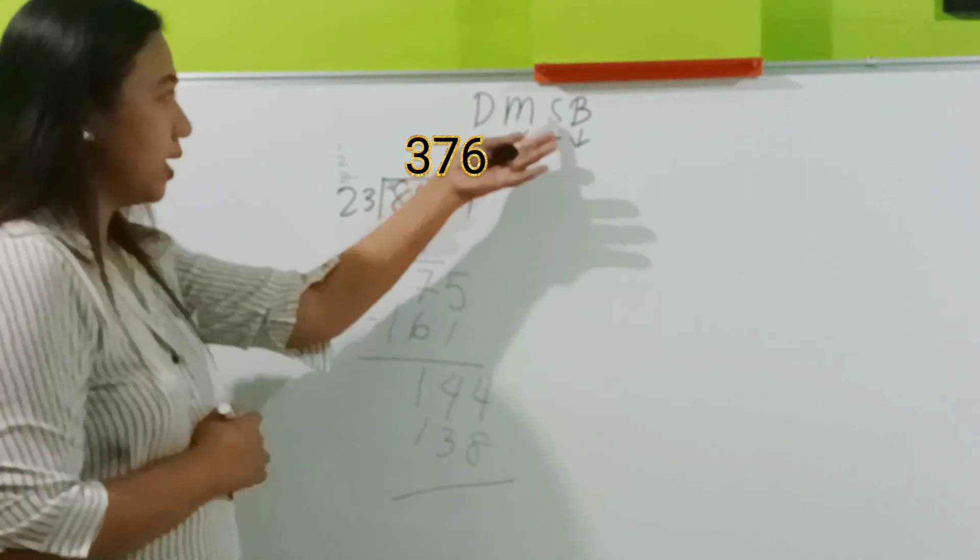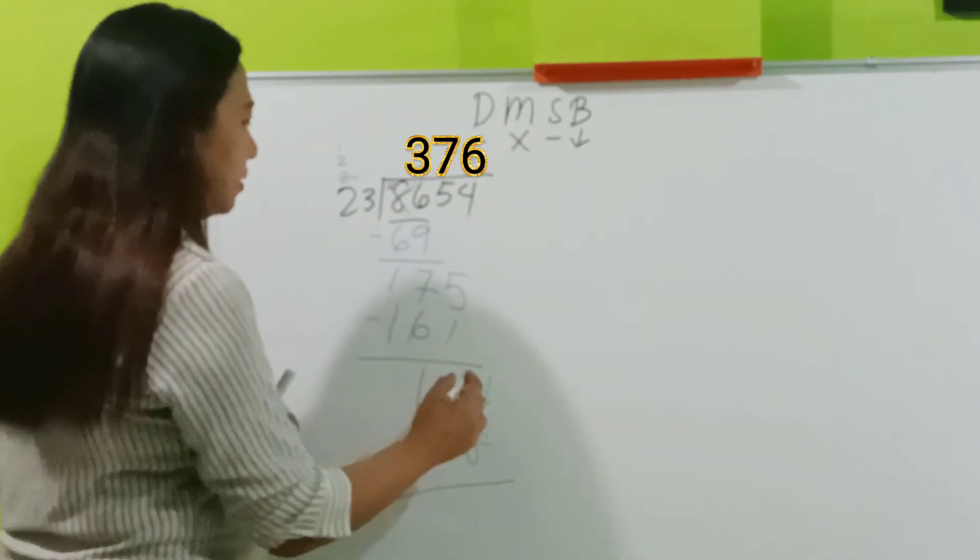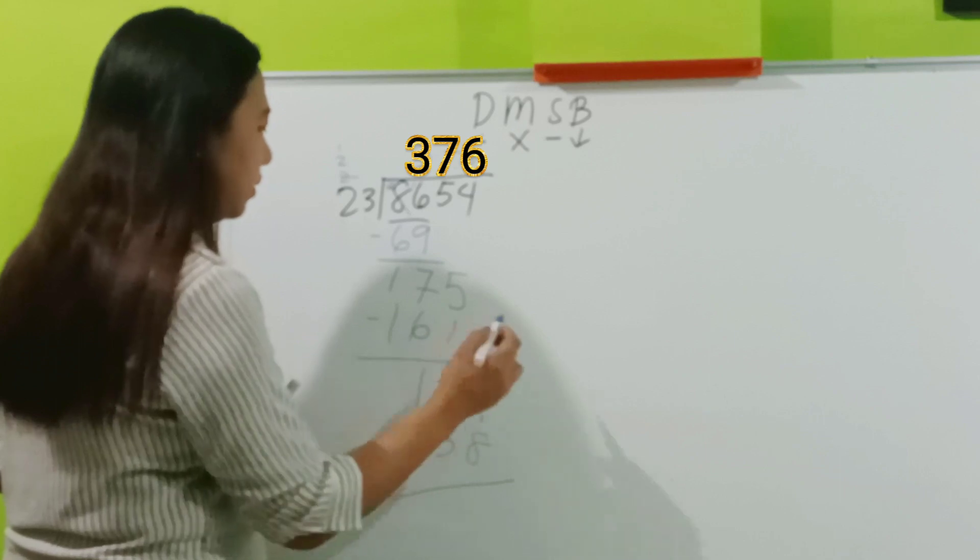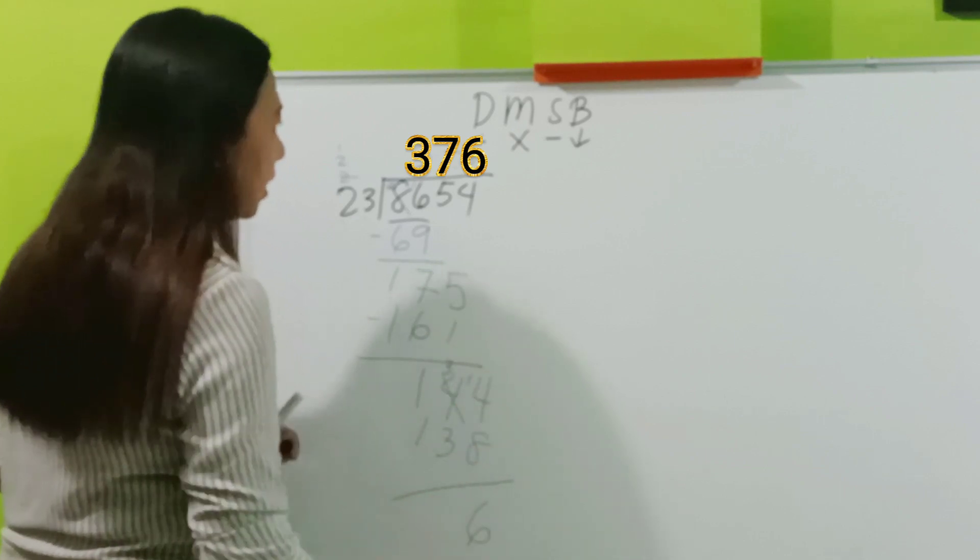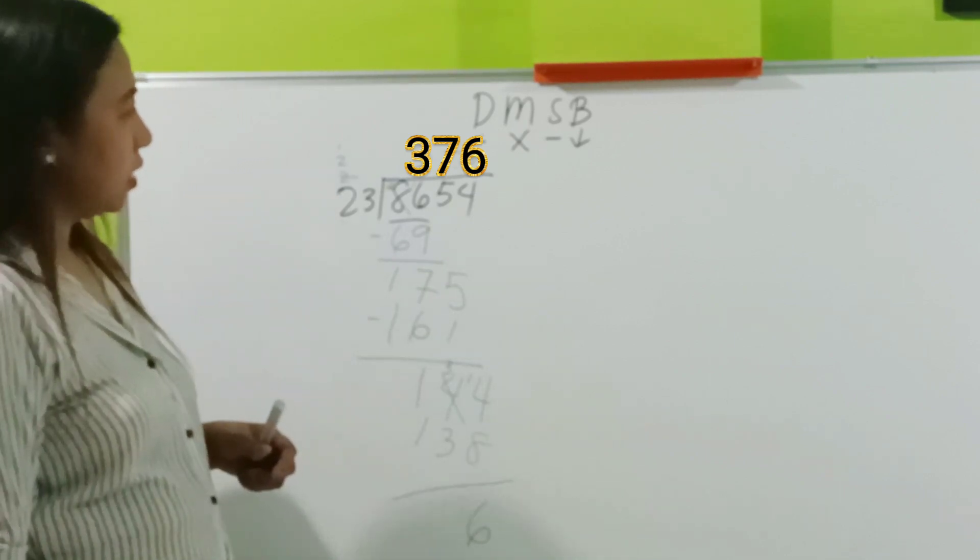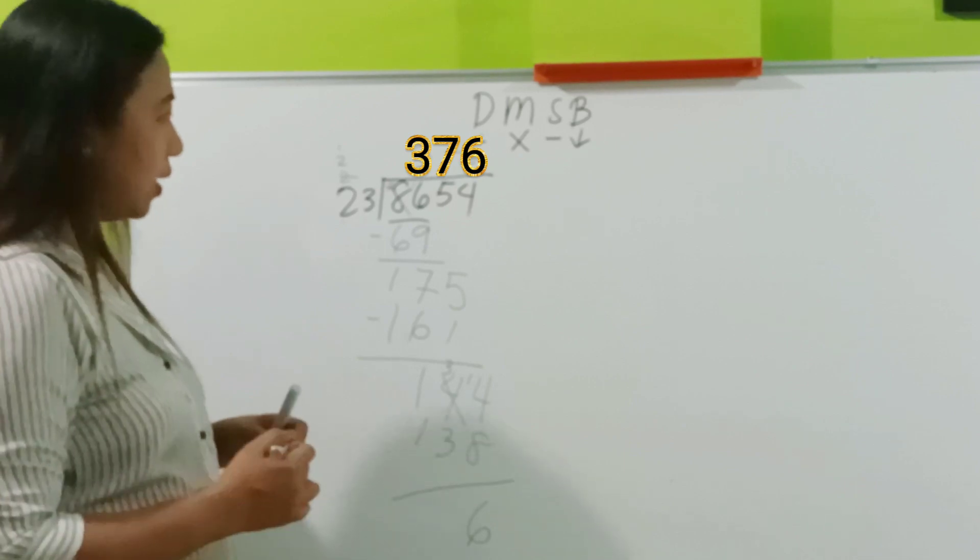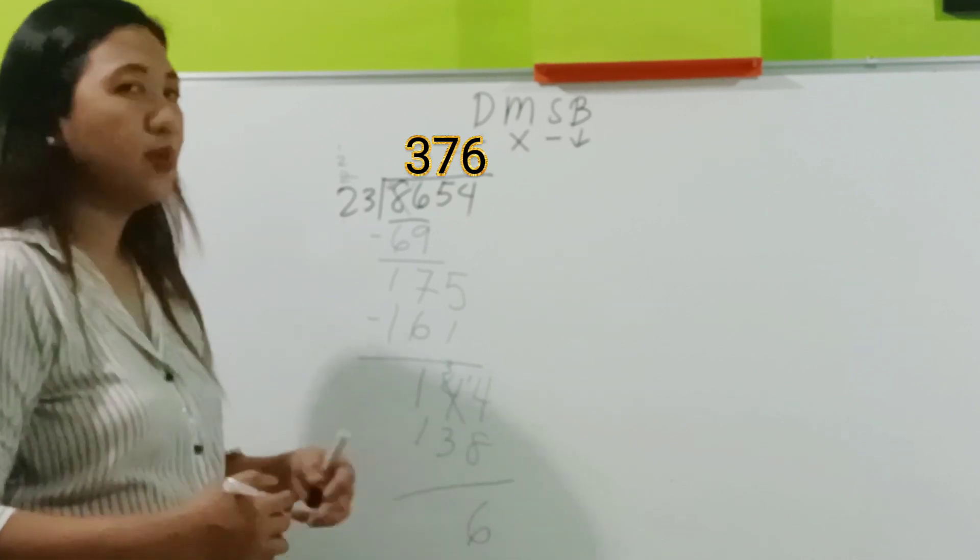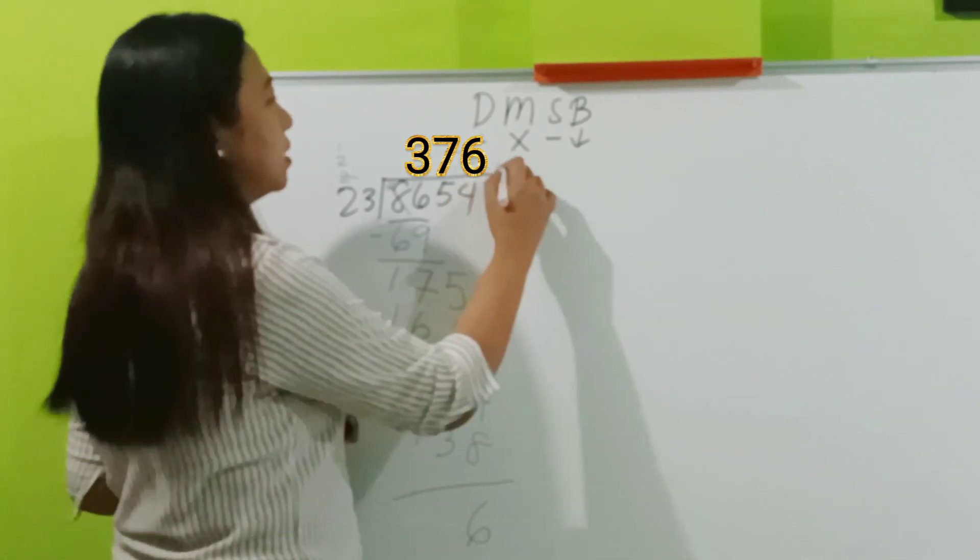Did we arrive at the lower product? Yes. So, we now subtract. We have to borrow. So, we are done in the bringing down everything. Therefore, this is now the remainder. Remainder 6.